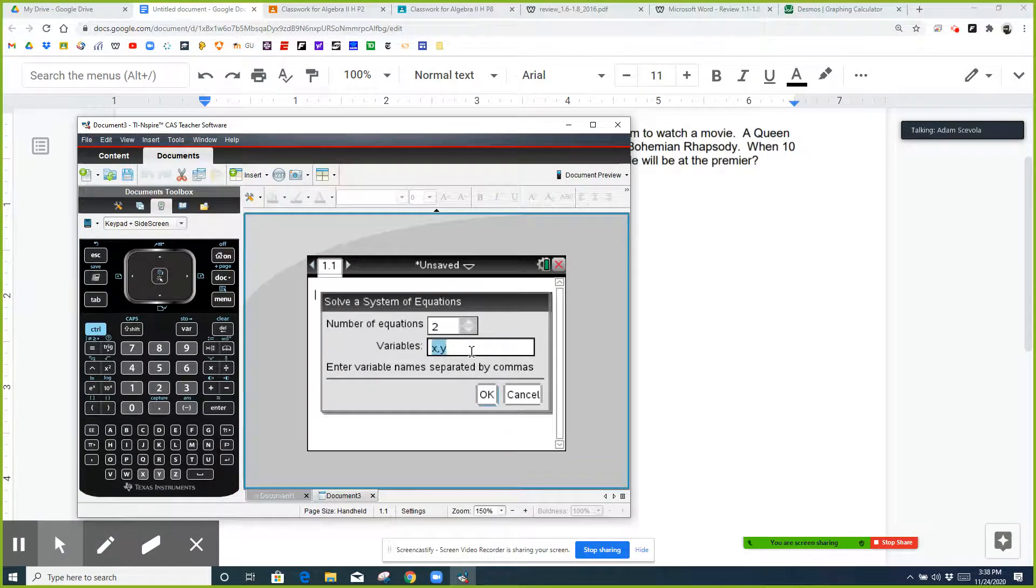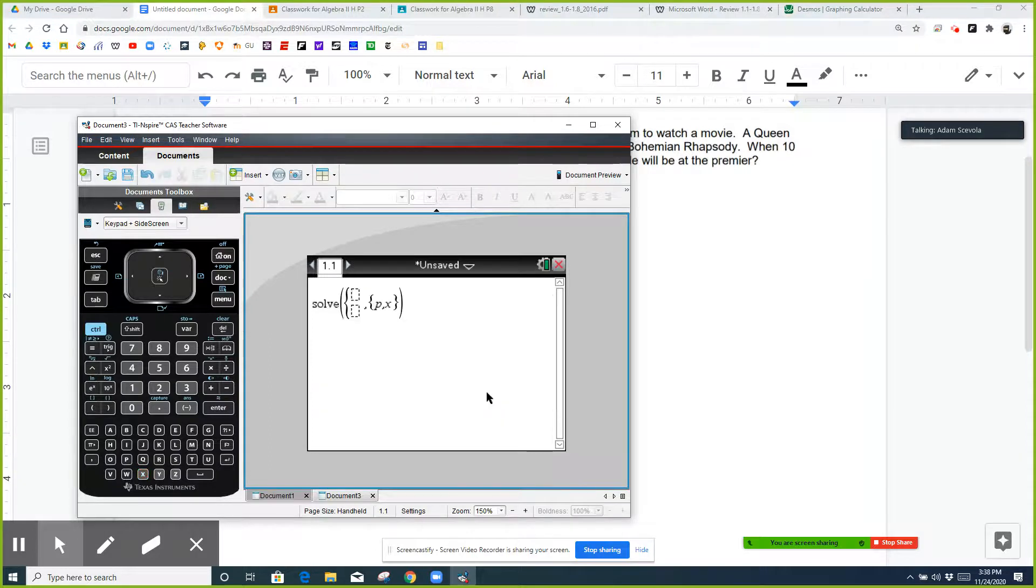Our variables were P and I think I made an X. So the first equation was the original price per person was 500 divided by X. And then the new price per person was the original price minus $2.50. And that equals 500 divided by X plus 10.